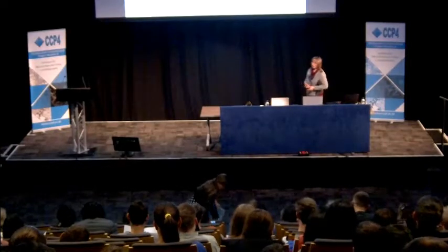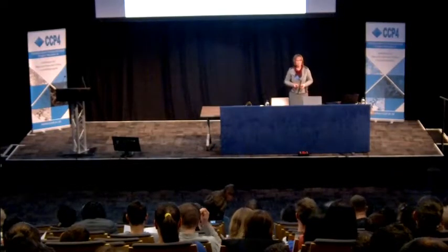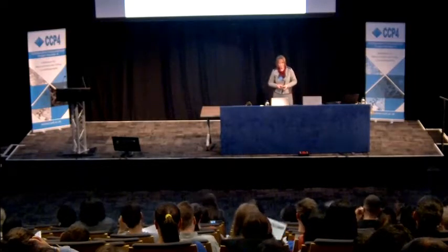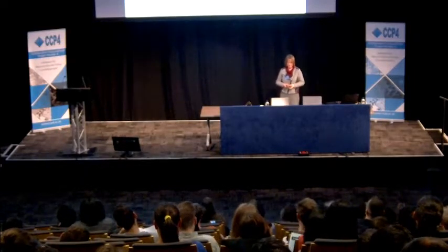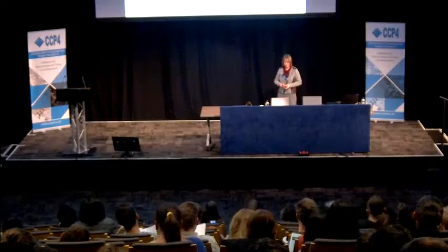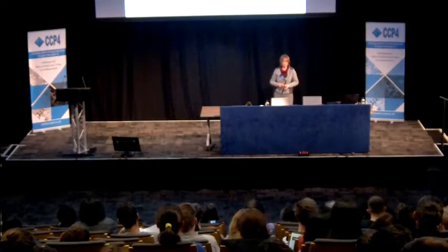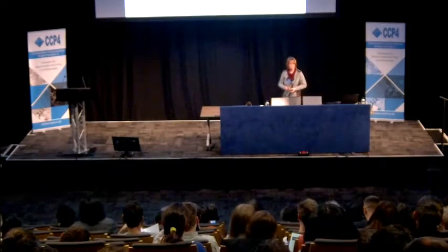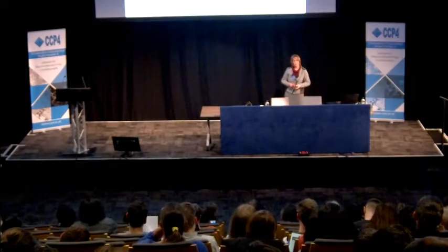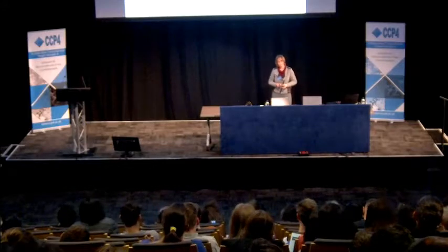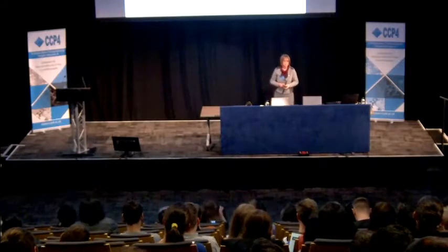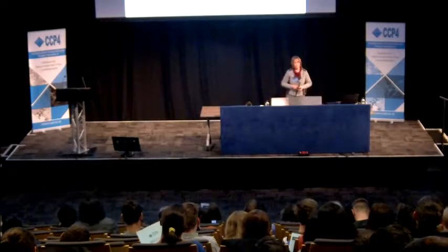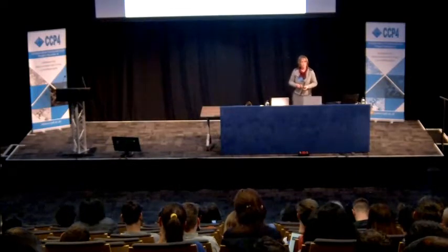Let me start with a textbook definition of twins. Twins are regular aggregates consisting of individual crystals of the same species joined together in some definite mutual orientation. We need two features to describe a twin. The first one is the symmetry operator, which transforms one orientation into the other — this is the so-called twin law. And secondly, we need the size of each twin domain, the fractional contribution.